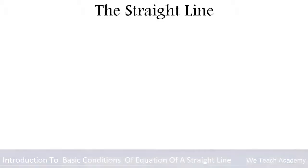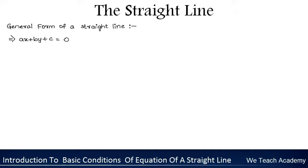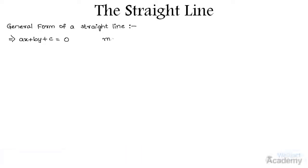Welcome back to Vidich Academy. In this section we are going to discuss some basic conditions regarding the concept of the straight line. First, let us discuss the general form of a straight line. The linear equation ax + by + c = 0 represents a straight line with slope M equal to minus a divided by b.